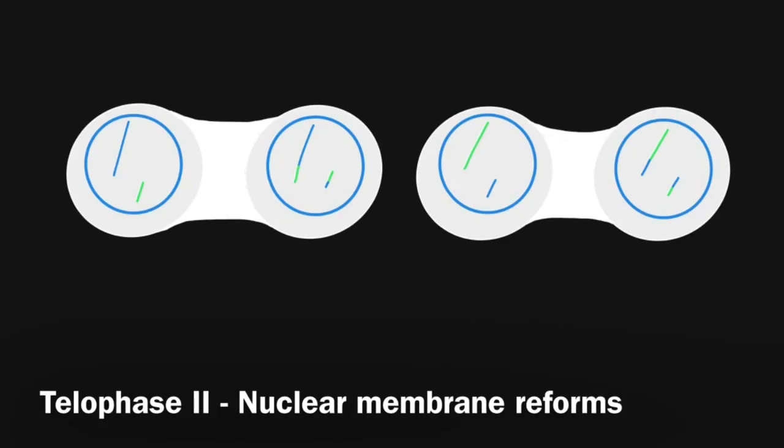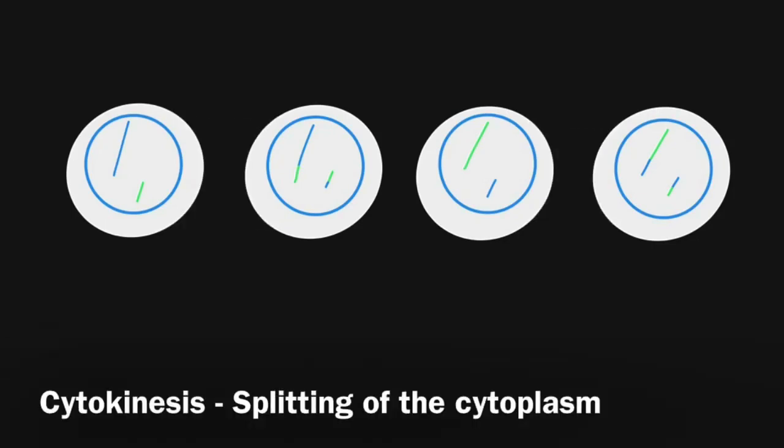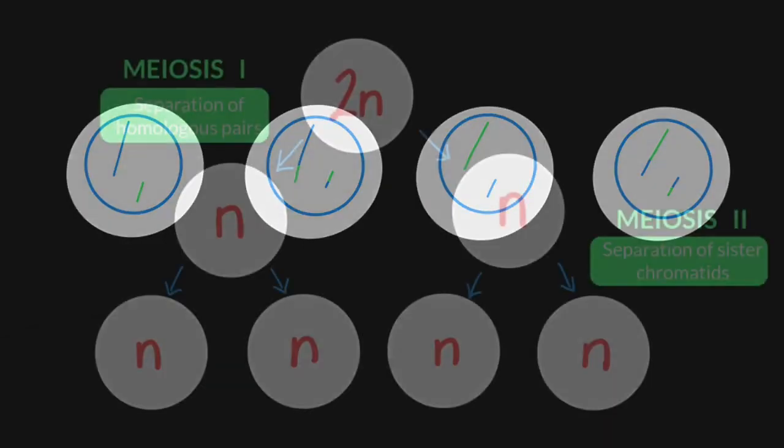During telophase 2, the nuclear membrane reforms, and this is again followed by cytokinesis, where the cytoplasm is split. The final product of meiosis is four haploid cells, each of which is genetically different from each other.